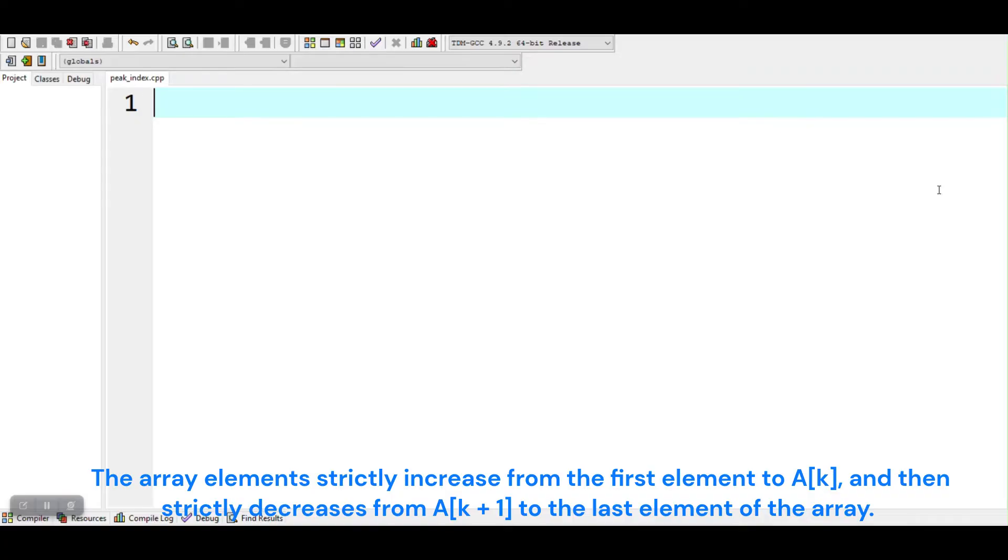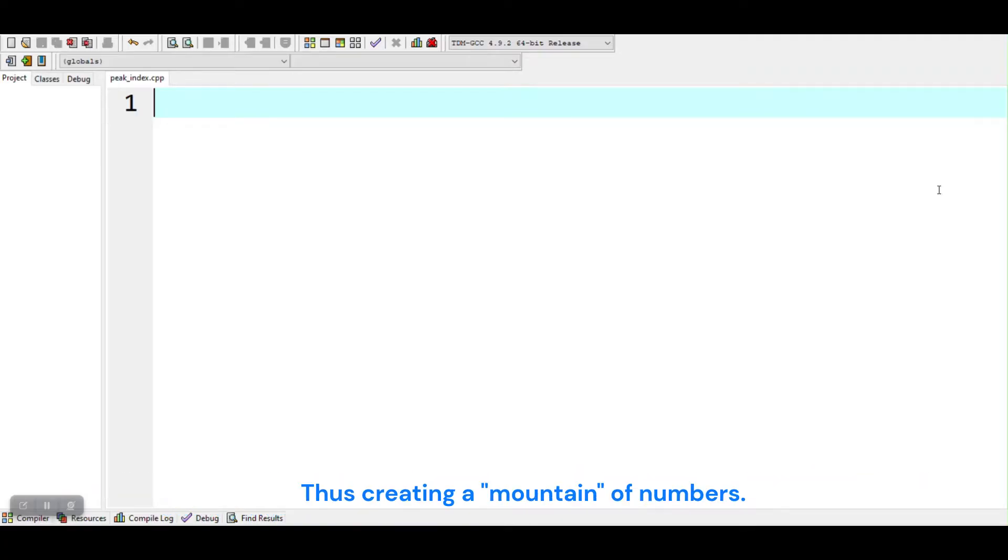The array elements strictly increase from the first element to a[k], and then strictly decrease from a[k+1] to the last element of the array. Thus creating a mountain of numbers.